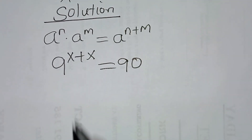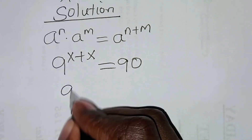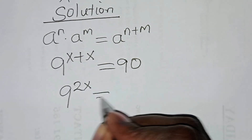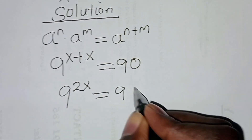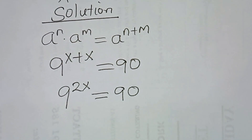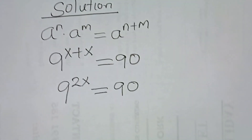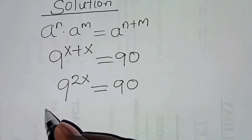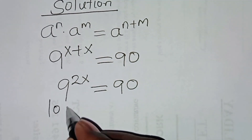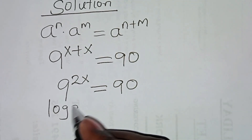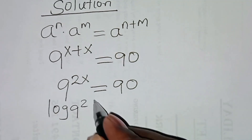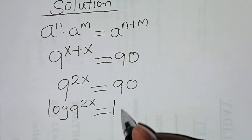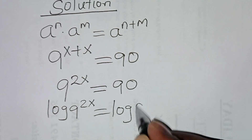So now here we'll have 9 to the power x plus x, which is 2x, and this is equal to 90. The next step: to solve for x, we introduce the natural logarithm on both sides, so that is log 9 to the power 2x, and this is equal to log 90.